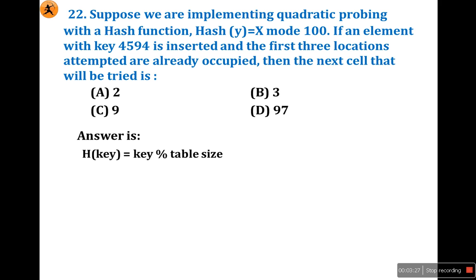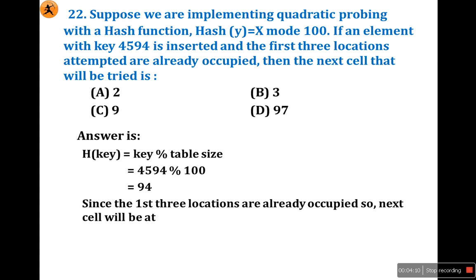You already know how to solve probing with the hash function. The standard formula is key = key % table size. The given key is 4594 and x mod 100, so 4594 mod 100 equals 94. The remainder is 94. Since the first 3 locations are already occupied, you got location 94, but you need to add 3 locations. The next cell will be 94 + 3 = 97. So the answer is D.